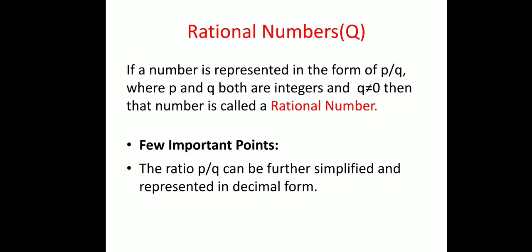Coming to rational numbers: rational numbers are represented by Q. What do we mean by rational numbers? If a number can be represented in the form P/Q, where P and Q are both integers and Q should not be equal to 0, then that particular number is known as a rational number. For a number to be a rational number, two conditions must be satisfied: first, P and Q — that is numerator and denominator — both should be integers; and second, Q should not be equal to 0. If both conditions are satisfied, we can say that the number is a rational number.